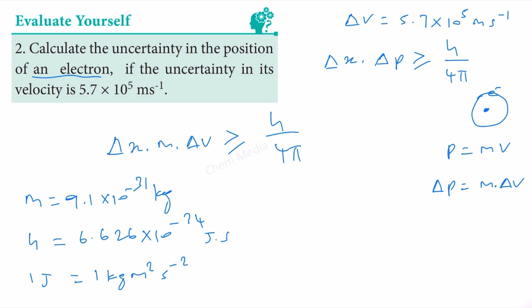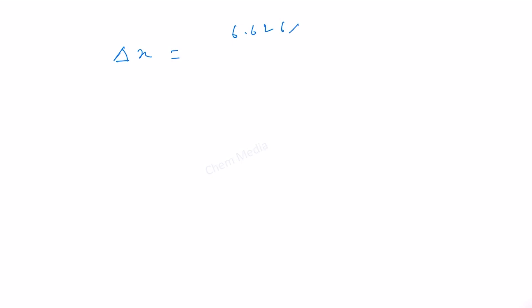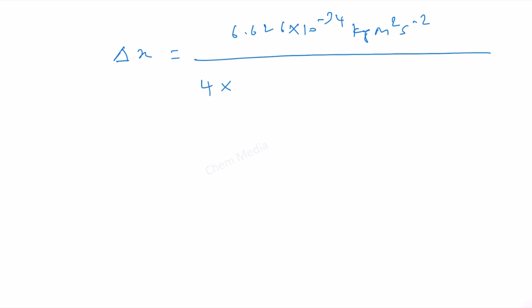Therefore, we are going to calculate delta x. Delta x is equal to 6.626 times 10 to the power minus 34 kilogram meter square per second, divided by 4 times pi (3.14) times 9.1 times 10 to the power minus 31 kilogram, times 5.7 times 10 to the power 5 meter per second.